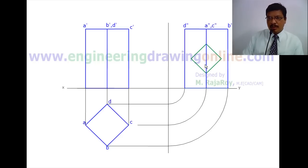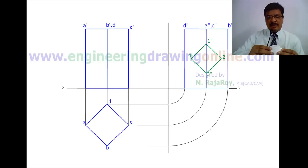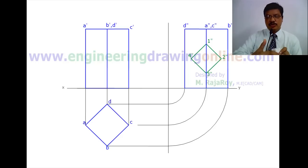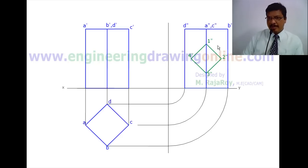Now naming the corners of the horizontal prism base in the clockwise direction. In the front view the corners are named 1 dash, 2 dash, 3 dash, 4 dash. In the side view we have represented the true shape of the base. When tilting to view from the front, corner 2 comes towards you. So in the front view the corners going clockwise are 1 dash, 2 dash, 3 dash, 4 dash. The side view shows the true shape.